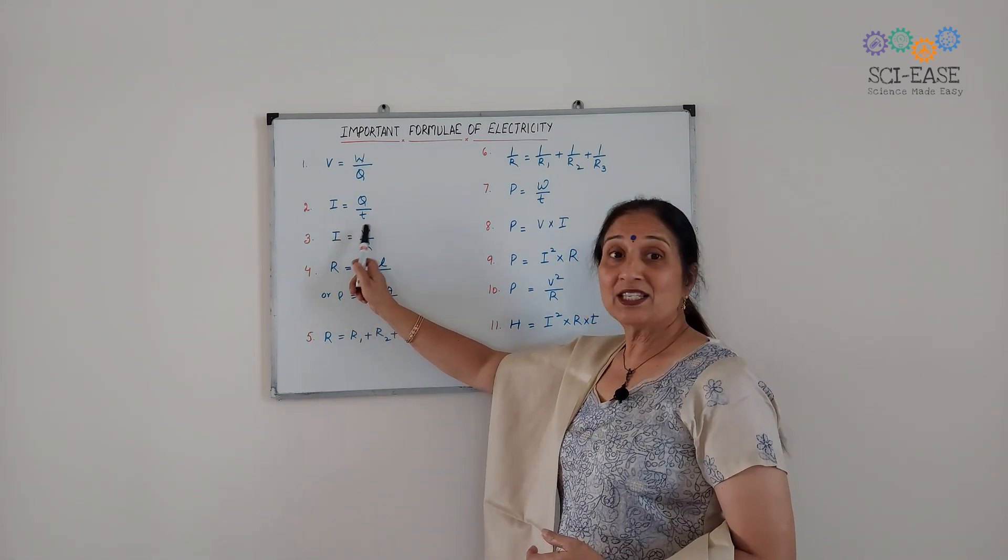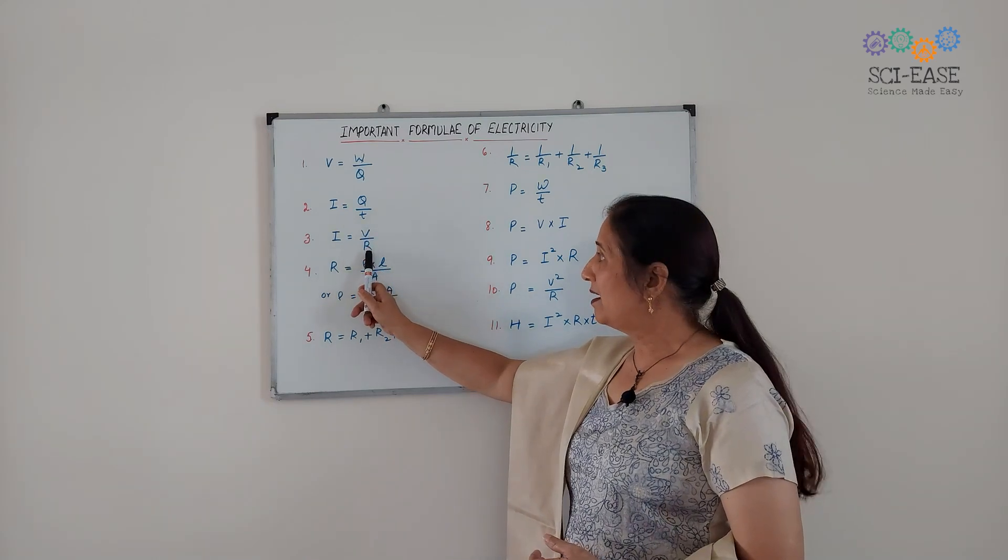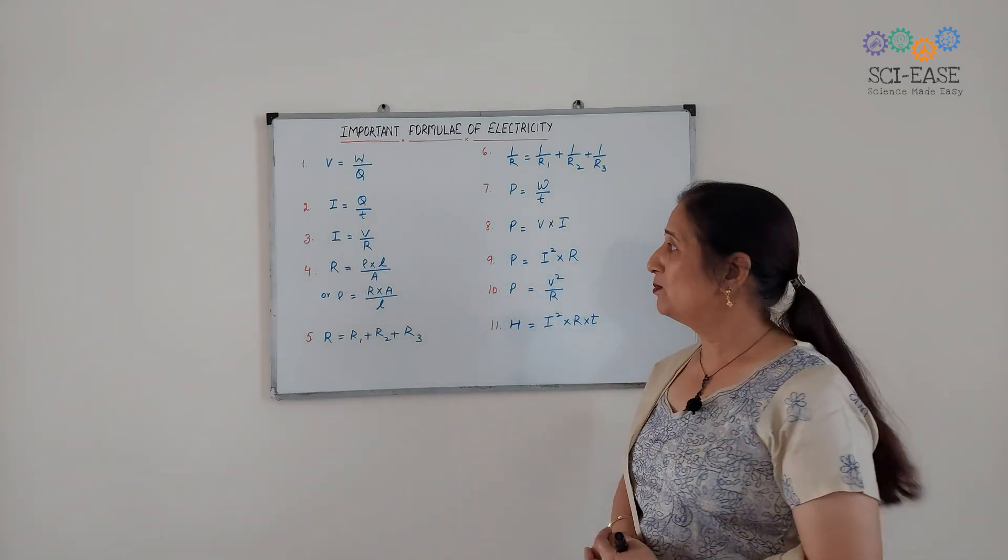Third, I equals V by R. This is Ohm's law.